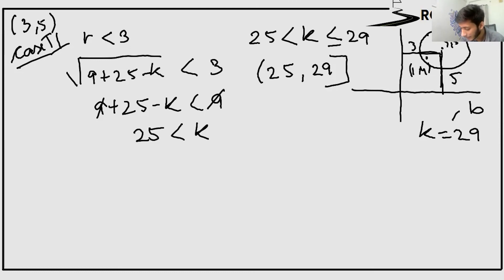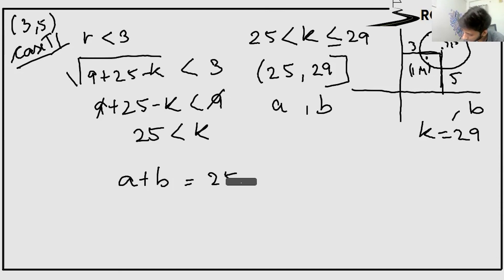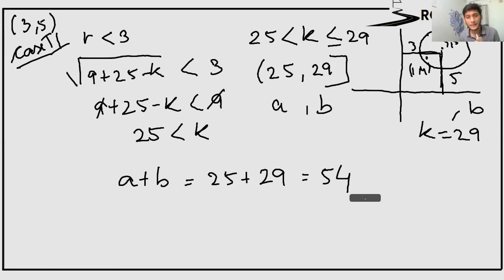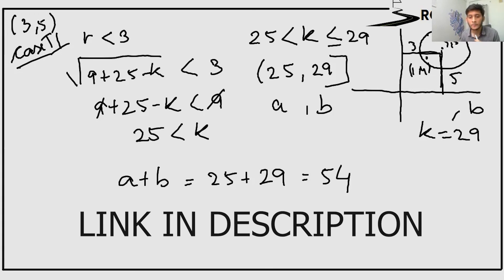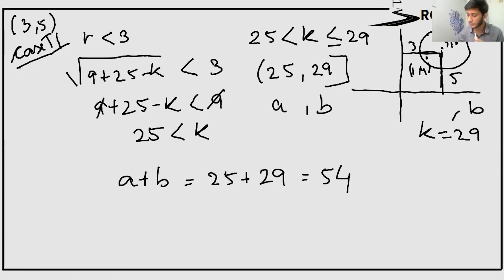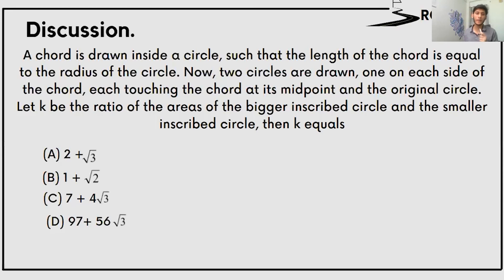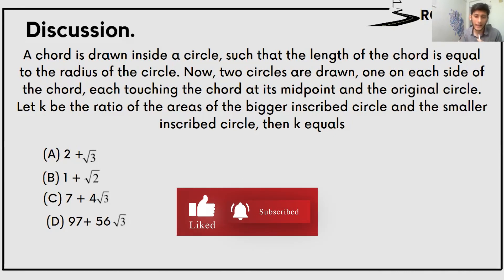So we get our A and B values: a equals 25 (open interval) and b equals 29 (closed interval). Therefore a plus b equals 25 plus 29, which is 54. So our final answer is 54. This was a lengthy but very good question with an important concept. If you have any doubts, feel free to ask on our Telegram channel. Before ending, I wanted to share one more IPMAT discussion question — you can answer it in the comments or discuss it on our Telegram channel. Thank you.